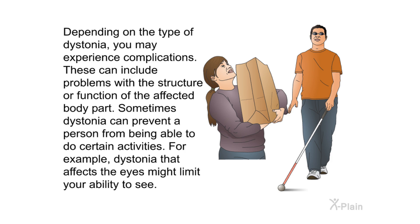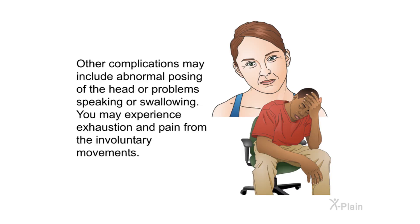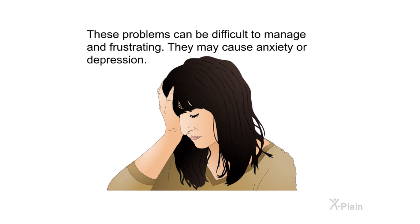Depending on the type of dystonia, you may experience complications. These can include problems with the structure or function of the affected body part, and dystonia may prevent certain activities — for example, dystonia affecting the eyes might limit your ability to see. Other complications may include abnormal posing of the head, problems speaking or swallowing, exhaustion, and pain from involuntary movements. These problems can be difficult to manage and frustrating, and may cause anxiety or depression.